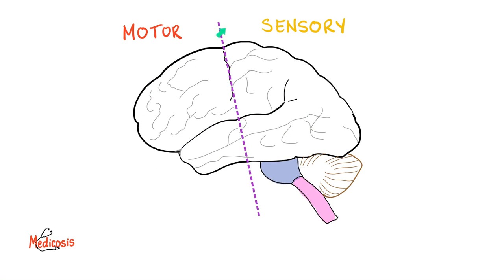Here is your brain — draw a line in the sand. Anything in front of it is motor; anything behind it is sensory. So let's say you're running from a tiger. You want to run — we'll start here in the primary motor cortex. Motor, because it's in front of the line.